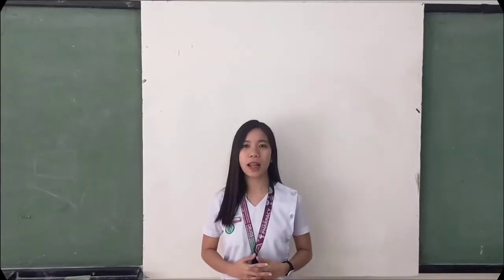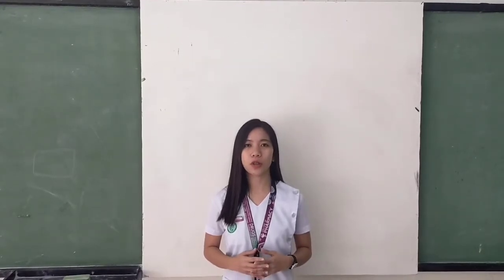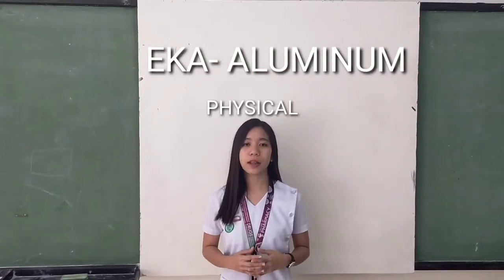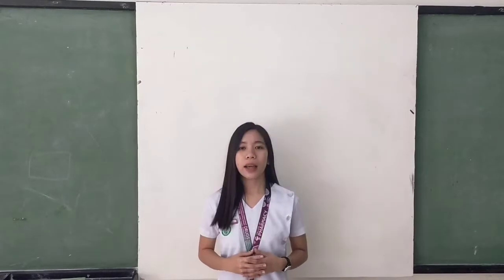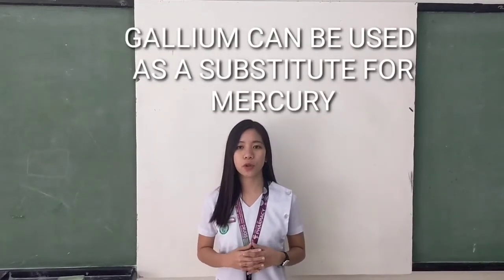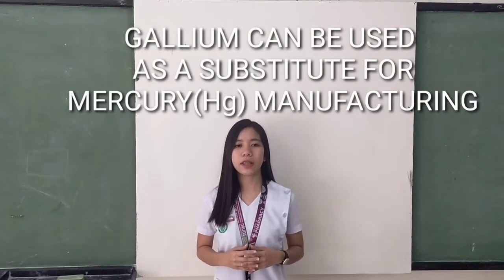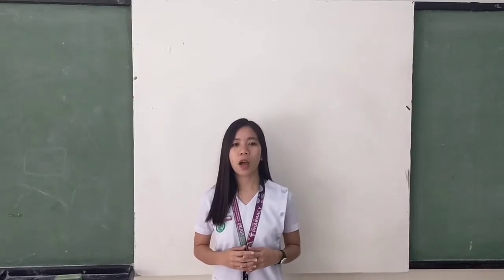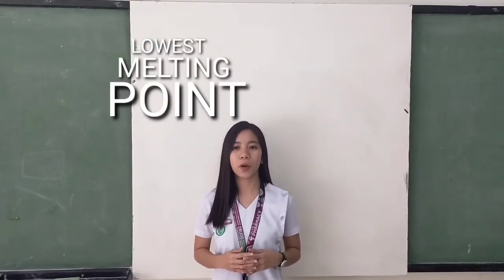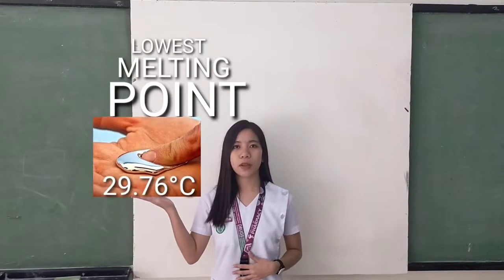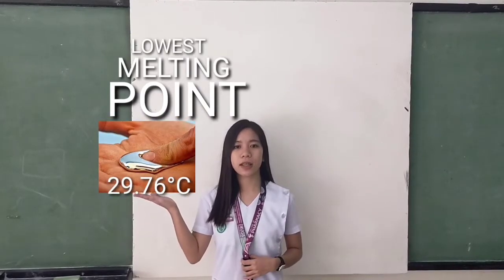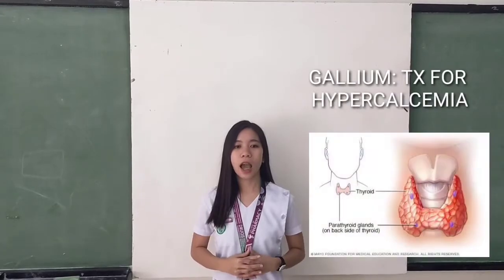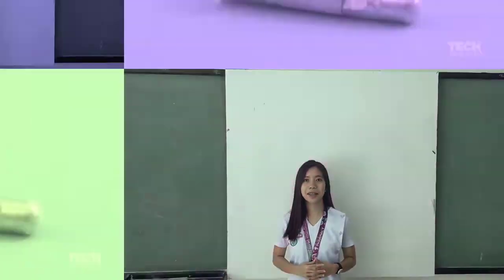For our third element, which is Gallium — also called an aluminum analog — it has the physical characteristics of aluminum. Gallium can be used as a substitute in the manufacturing of certain lab materials, and also has one of the lowest melting points, which is 29.76 degrees Celsius. Gallium is also used in treating hypercalcemia.